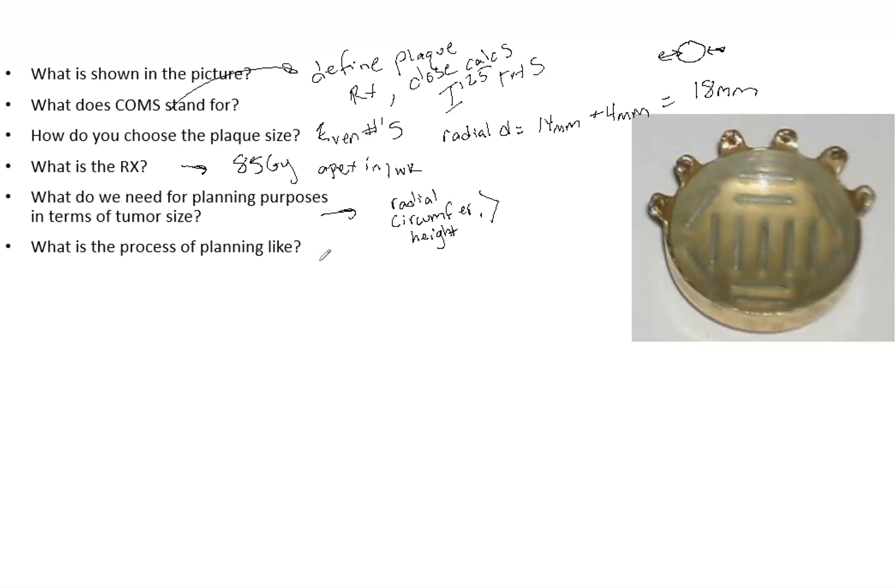What is the process like? The dose calculation is based on dimensions. Source ordering, inventory, and assay of seeds is necessary, done by a physicist. You have to install the seeds in the insert in this plaque pictured here. You also need sterilization of the plaque and anything else you may be using in surgery.